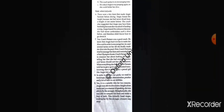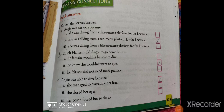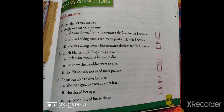With this, the question answers are over. Let us come on to the exercise from page number 135. Quick answers, question number 1, choose the correct answer: Angie was nervous because she was diving from a 10-meter platform for the first time. Second: coach Henson told Angie to go home because he knew she wouldn't want to quit. Third: Angie was able to dive because she managed to overcome her fear.